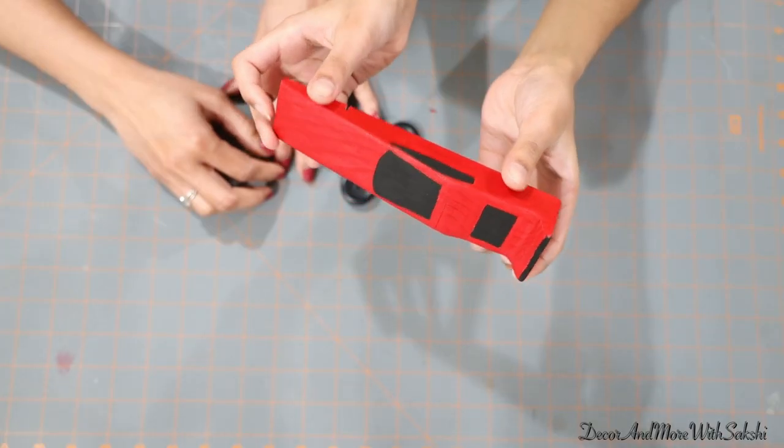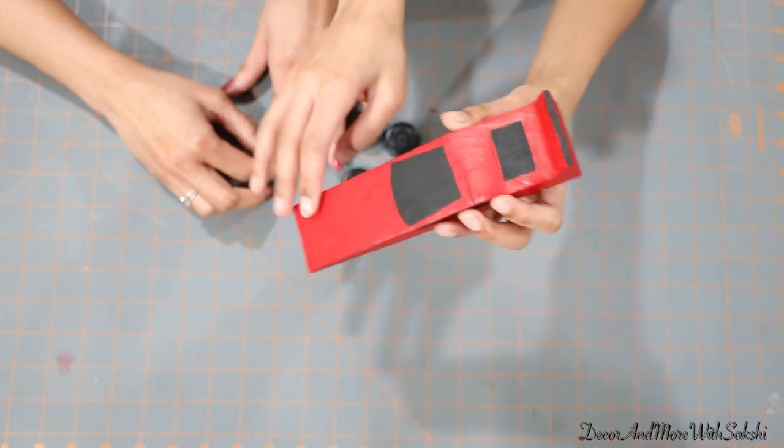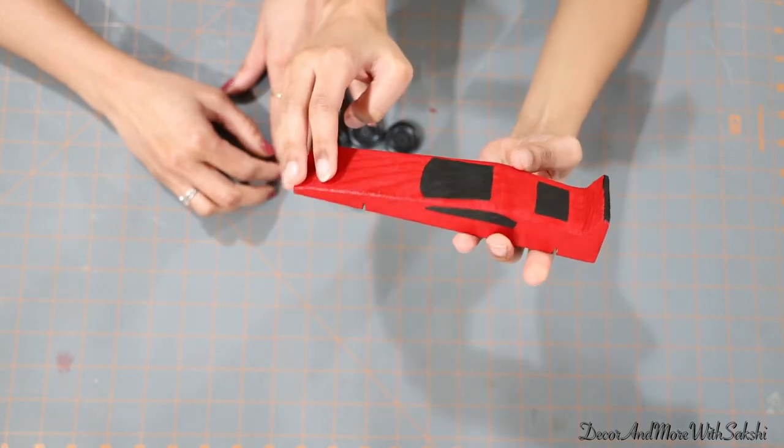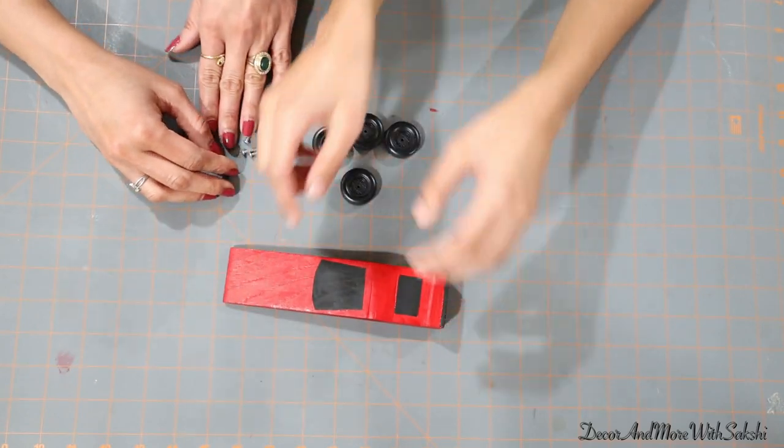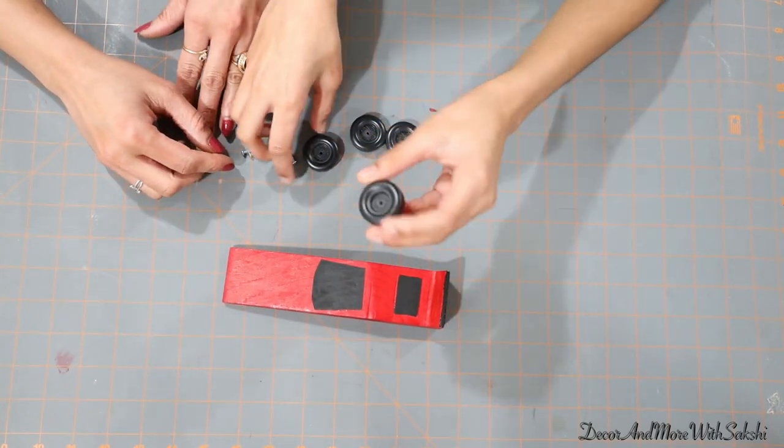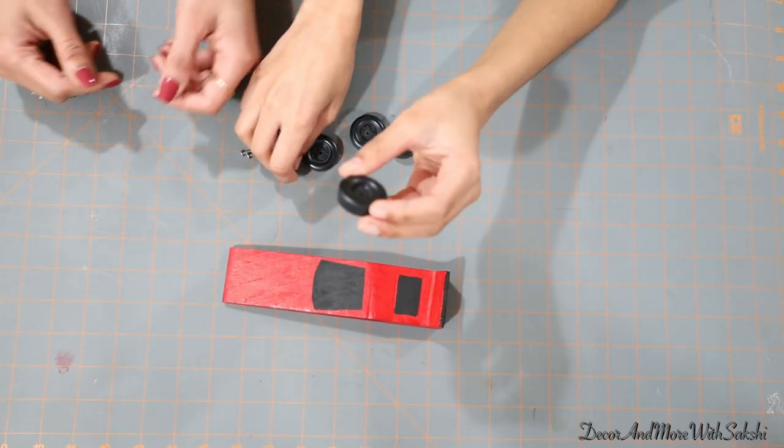Here we are done with the painting. To make a really fast car, you need to have a nice aerodynamic shape. Now we will be inserting the wheels, but before we do that, we need to polish the insides.